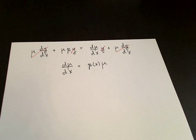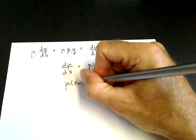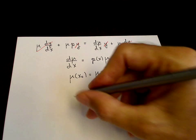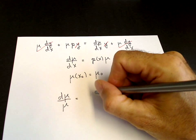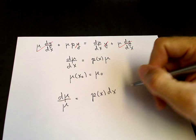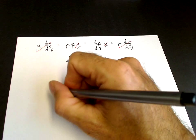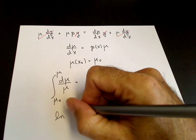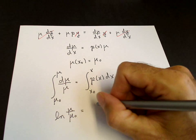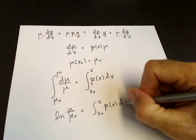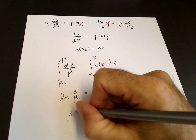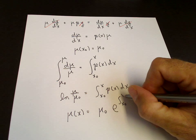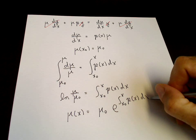We can solve this ODE. We also have an initial condition: μ(x₀) = μ₀. We solve by separating variables: dμ/μ = p(x) dx. Integrating from x₀ to x on the right and from μ₀ to μ on the left, we end up with ln(μ/μ₀) equals the integral from x₀ to x of p(x) dx. Solving for μ: μ(x) = μ₀ · e^(∫from x₀ to x of p(x) dx). So we have found our integrating factor.